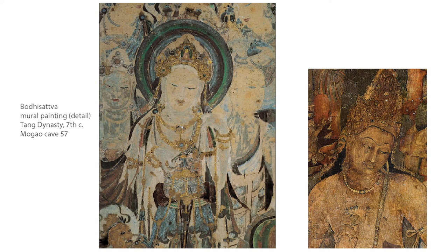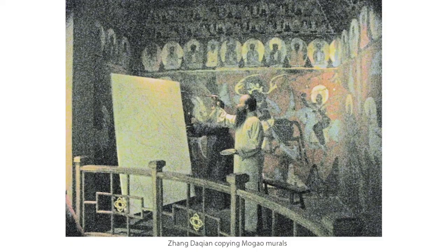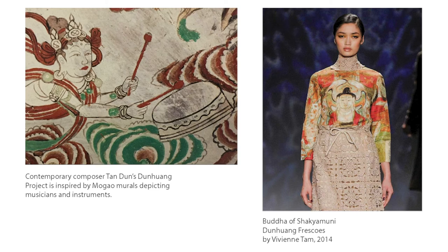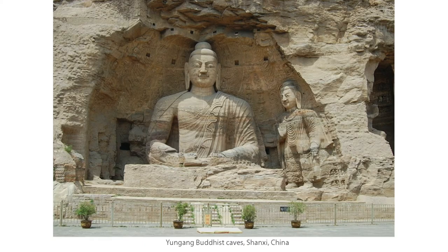Given its distance from the capital, the Mogao caves were way out in the western regions, yet during the Tang period — 7th to 10th century — these paintings were far from provincial. They have been a major source of inspiration for Chinese artists since they were rediscovered in the 1940s. Zhang Daqian, one of China's most famous modern artists and one of China's most famous forgers, studied the murals and even lived at the caves for a number of years. To this day, almost all Chinese fine art students still make the pilgrimage to the caves to study the art. Contemporary composer Tan Dun's Dunhuang project is inspired by the Mogao murals depicting musicians and instruments, and fashion designer Vivienne Tam has traveled to the caves and even designed a line based on the murals.